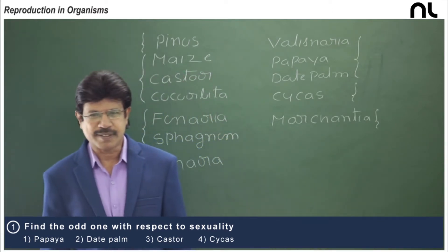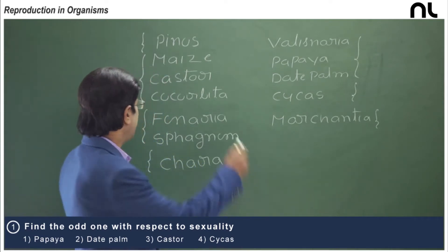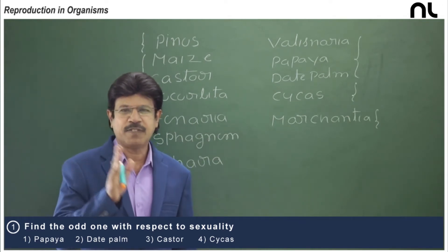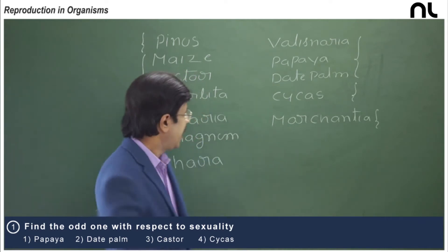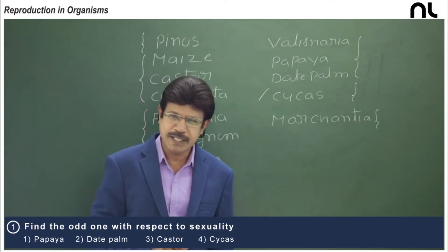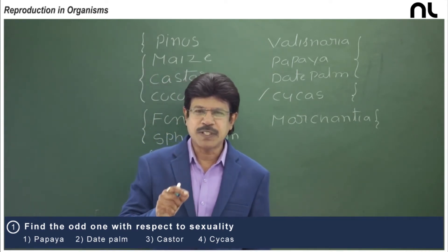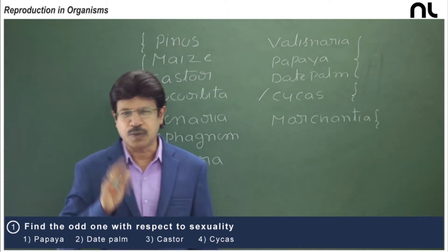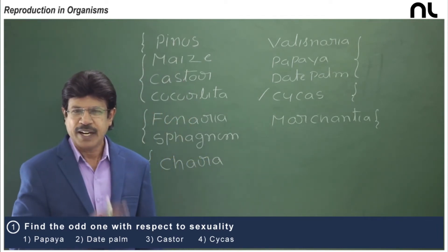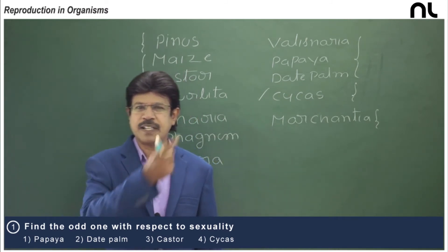In textual examples, considering dioecious and monoecious sporophytes — Pinus is a gymnosperm where the sporophyte is monoecious, meaning both male and female cones are formed on the same plant. In the case of Cycas, it is a dioecious sporophyte: the male cone is on the male plant, while the megasporophylls on the female plant are free and do not compact to form a cone. So a gymnosperm with male and female cones on the same plant refers to Pinus, while a dioecious gymnosperm with megasporophylls on a separate plant refers to Cycas.